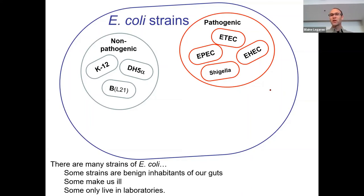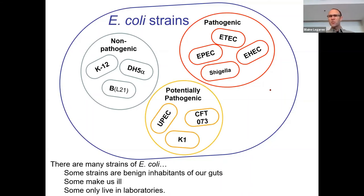Some E. coli fall into a third category — potentially pathogenic — meaning they don't usually cause disease, but if they get into the wrong place they might cause something like a bladder infection. That happens sometimes: E. coli gets into the urethra, into the bladder, and then it's a bladder infection causing discomfort, hopefully nothing worse.